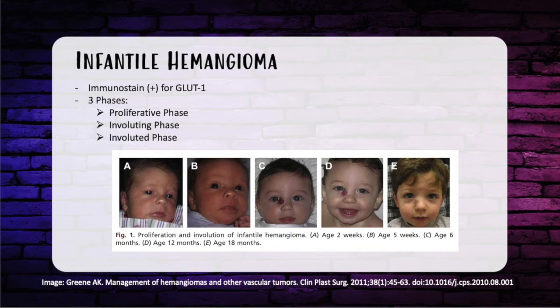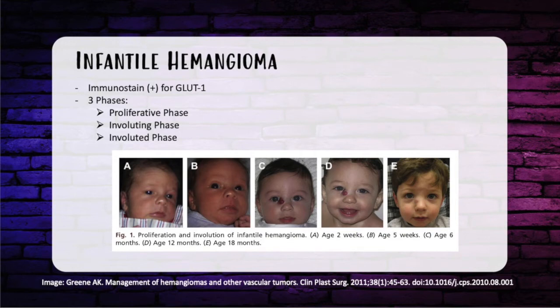The hallmark feature of infantile hemangioma is that the lesion is not present at birth — it shows up around two weeks of age, grows rapidly, then slowly regresses and never reoccurs. There are three phases: the proliferative phase, where the tumor rapidly grows until the child is about nine months of age; the involuting phase after 12 months, where the tumor starts to regress; and the involuted phase, where it's completely involuted.